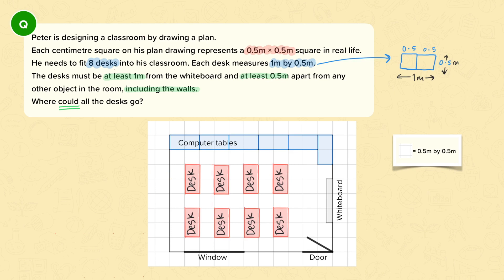Now that I've arranged the desks this way around, I can see they're all far enough away from the whiteboard so it doesn't pass that line that is a meter away. They are far enough away from the walls and the other objects in the room. And so this is my plan for where the desks could go.